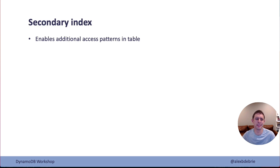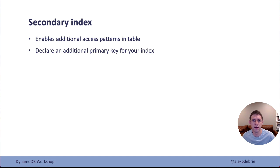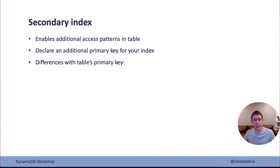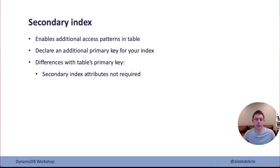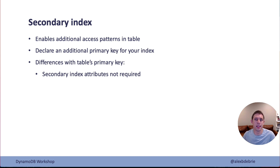With a secondary index, it enables additional access patterns on your table. If your primary key satisfies some access patterns but you want to query in a different way, secondary indexes allow you to do that. Basically, you're declaring an additional primary key for your secondary index. Now, one difference is that secondary index attributes are not required on your items. Every item you write into your table needs to have the primary key attributes, but that's not the case for your secondary index. If an item doesn't have one or both attributes for your secondary index, it simply won't be copied into that secondary index.